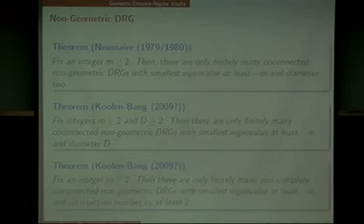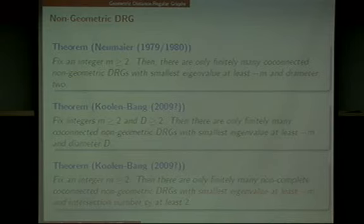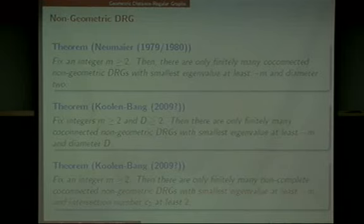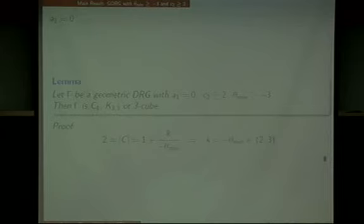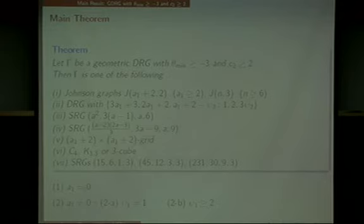Looking at the third theorem again, we already know the finiteness of non-geometric DRGs. So from now on, we are interested in characterizing geometric distance regular graphs with smallest eigenvalue theta_min equal to minus M, and intersection number C2 at least 2. The main theorem is concerned with this classification for integer M equals 3. In the proof, I divide it into three cases: the first case is the triangle-free case, the second is A1 non-zero and psi_1 equals 1, and the third is A1 non-zero and psi_1 at least 2.